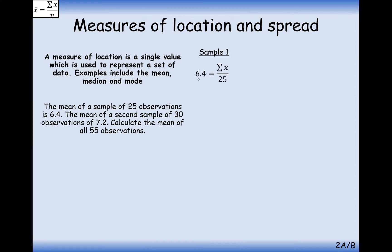So for sample one, what we had was an average of 6.4, and that n value here was 25. So what we can do from here is if we multiply both sides by 25, we work out what all of our x pieces of data were when we add them up, and we should have got 160 out of those 25 pieces of data. We can do exactly the same thing